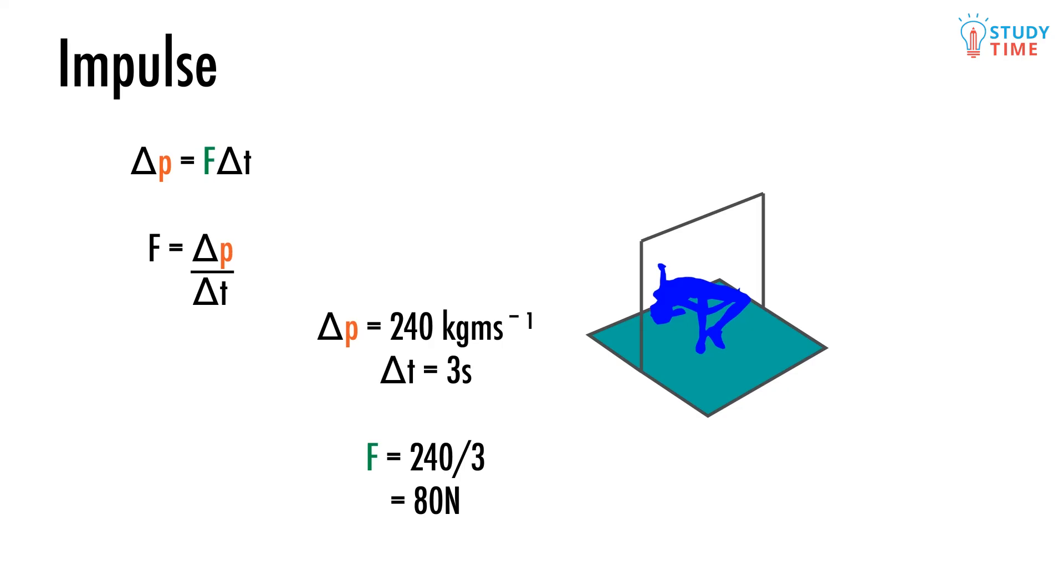What will the force be that was exerted on you? All we need to do is stick these numbers into the equation. If F equals delta p over t, then F equals 240 over 3, which is 80 newtons.